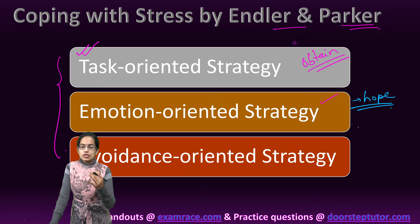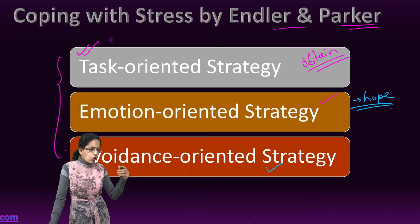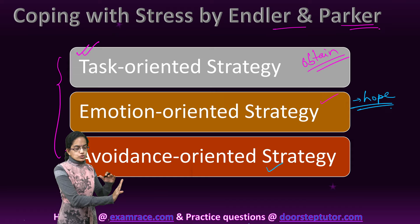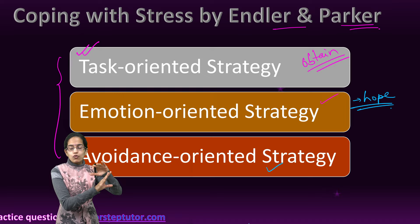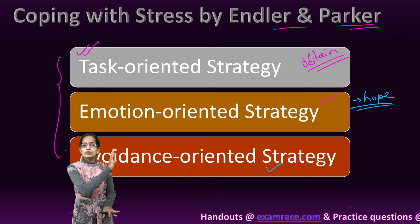The last is the avoidance-oriented strategy, which involves denying or minimizing the seriousness of a situation. Any situation you encounter can be very serious, but you just want to avoid it — hide it behind the curtains, not reveal it. You simply want to keep that thing away from your mind, avoid it, and not see or hear anything related to it.